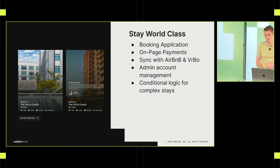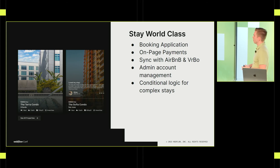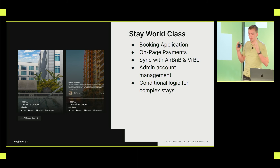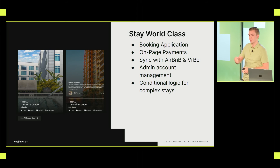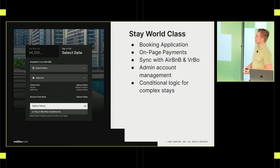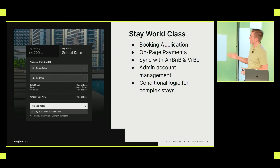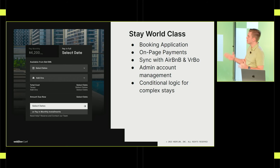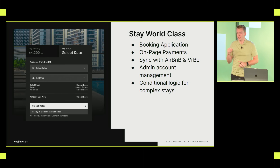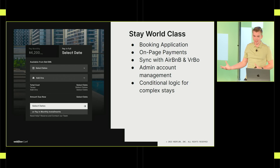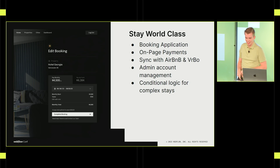Stay World Class is one of our bigger applications — a massive property booking web application. Their database actually syncs with Airbnb and Vrbo, so whenever someone makes a booking on those platforms, it syncs to our custom-built database. You can select your dates using a custom JavaScript date picker. There is a vast amount of conditional logic — users only book a minimum of 30 days, different pricing variables apply — and at checkout the user doesn't leave the website. We've embedded Stripe Elements so the user can pay directly on-site rather than going to a third-party Stripe checkout page. It's all on-page.